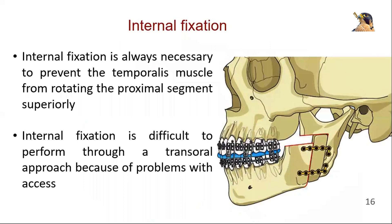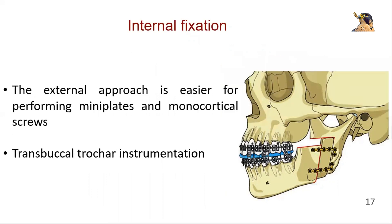Internal fixation is always necessary with an inverted L-osteotomy to prevent the temporalis muscle from rotating the proximal segment superiorly. Internal fixation is difficult to perform through a transoral approach because of problems with access. It is easier if an external approach is used, and can be performed using mini plates and monocortical screws.